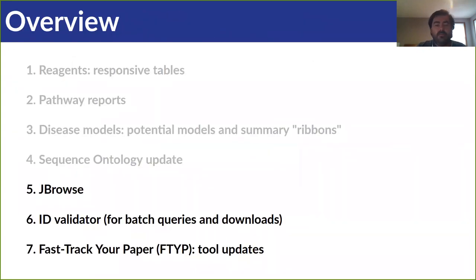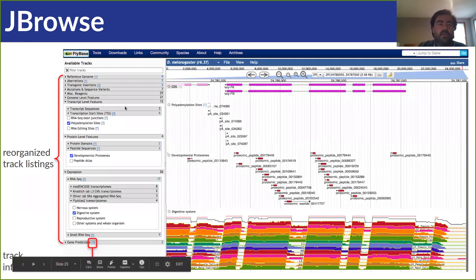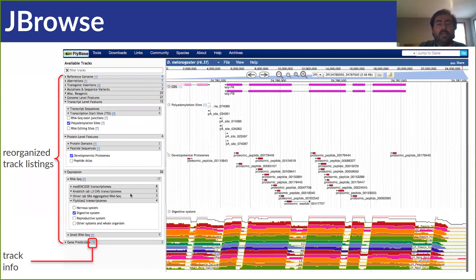We're heading into the home stretch. First, JBrowse 2, which is now the standard genome browser at Flybase, supplanting JBrowse 1, which will be phased out over the next year. JBrowse 2 offers many advantages including faster performance, better scaling of large data sets, new data visualization features, and improved options for searching and browsing available data tracks. We've also reorganized the data tracks into a hierarchical tree with more intuitive section headings, with track descriptions readily accessible from the question mark icon in the track view. New data tracks include FlyAtlas2 RNA-seq genome coverage tracks with male and female samples for studies of sexual dimorphism, and a polyadenylation sites track offering a view of alternative transcript polyadenylation.